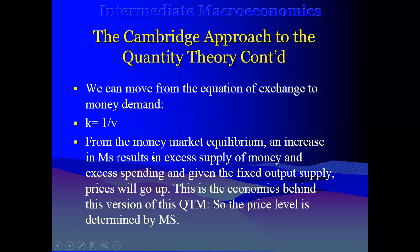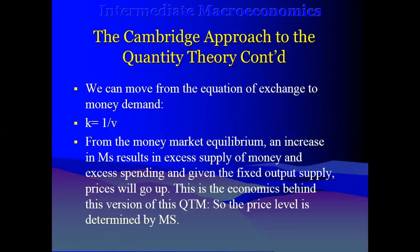So if there is an increase in money supply, there is going to be excess money — a situation termed as 'more money chasing fewer goods.' Whenever there is a disequilibrium in the money market resulting from an increase in money supply, we are going to have excess money in the system. When there is too much money, it will cause excess spending. With fixed nominal output Y, when there is too much money in the system, it doesn't mean there is going to be a corresponding increase in output.